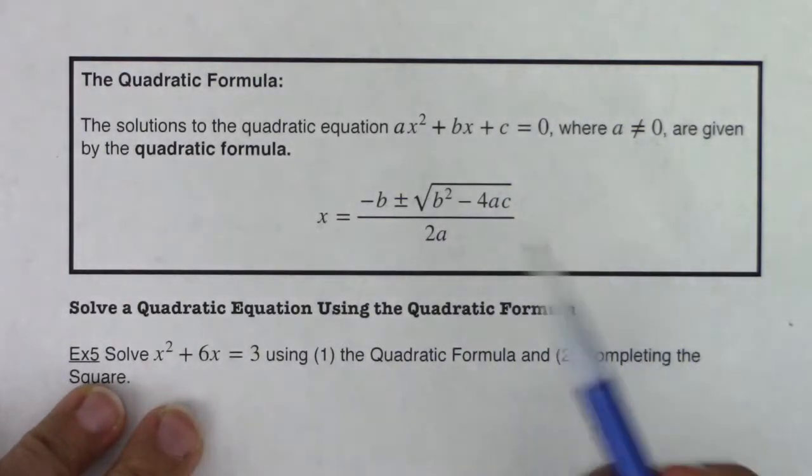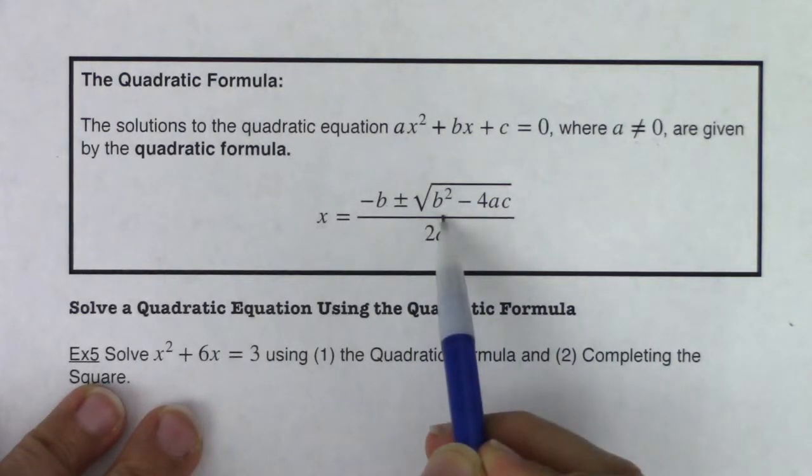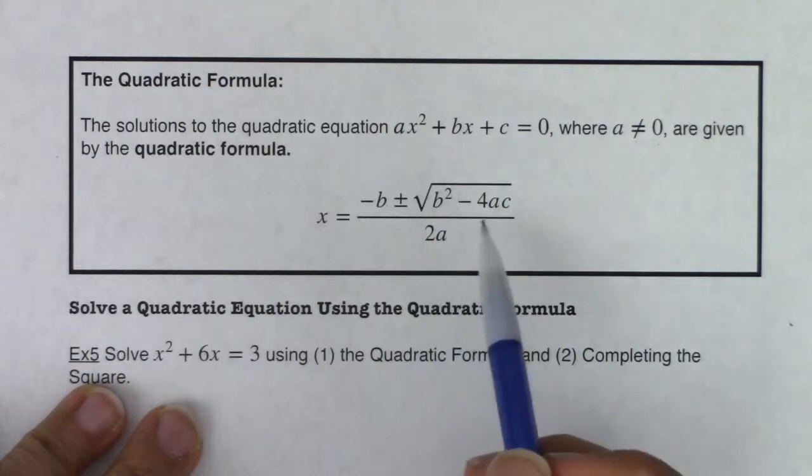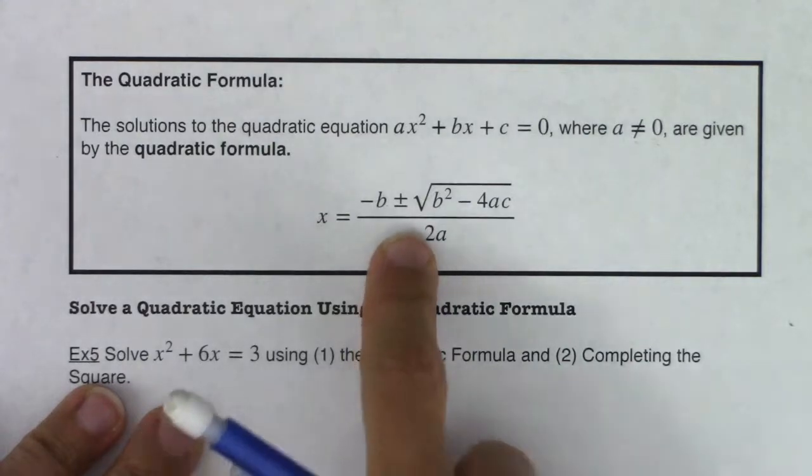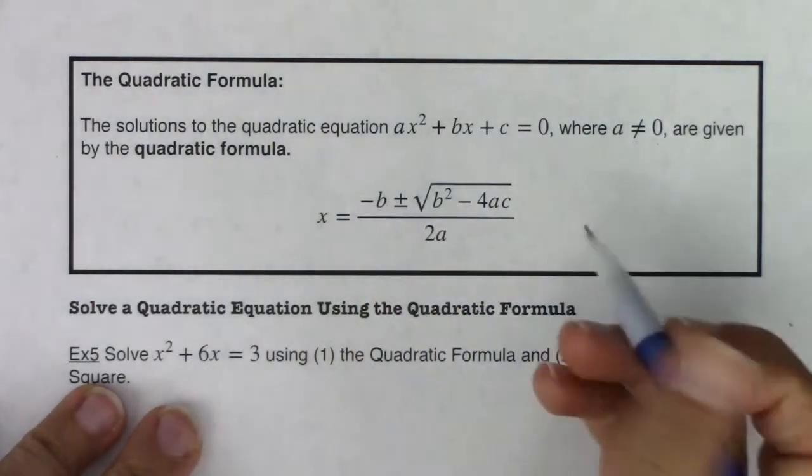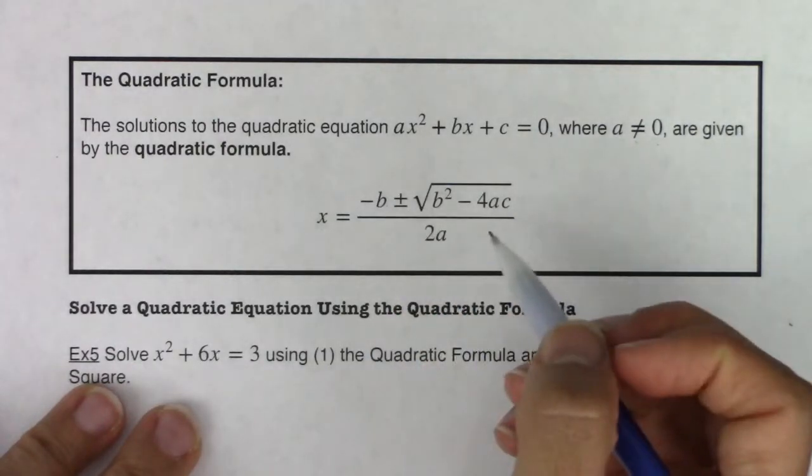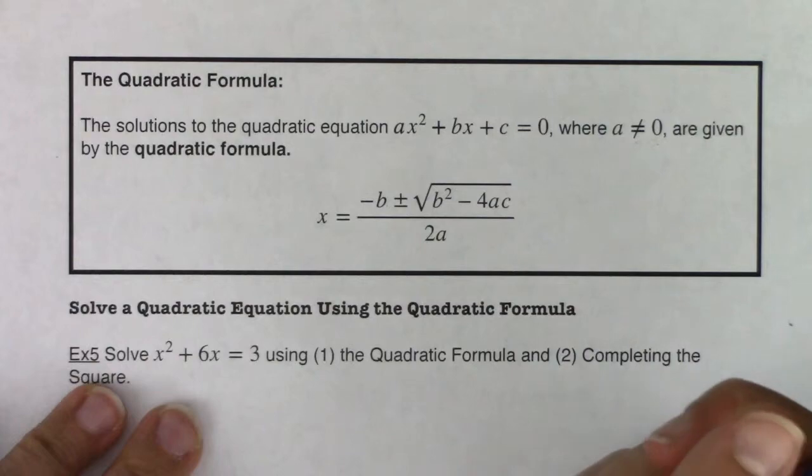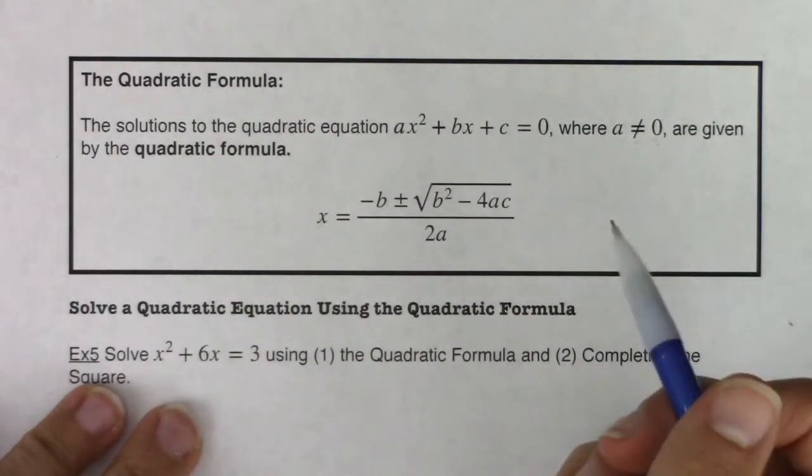All right, so here's the quadratic formula: negative b plus or minus the square root of b squared minus 4ac all over 2a. And if you ever get a little bored, maybe you don't have plans on a Friday night, just google quadratic formula song. There are plenty of videos up on YouTube where people like to sing this formula out to the tune of pop goes the weasel, that's a pretty popular one, happy birthday, there are other popular songs out there you can sing the quadratic formula to.